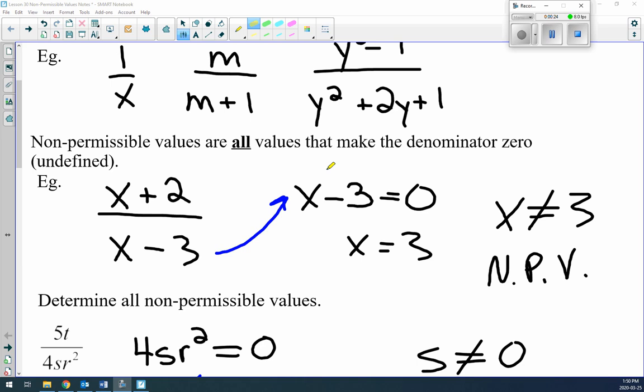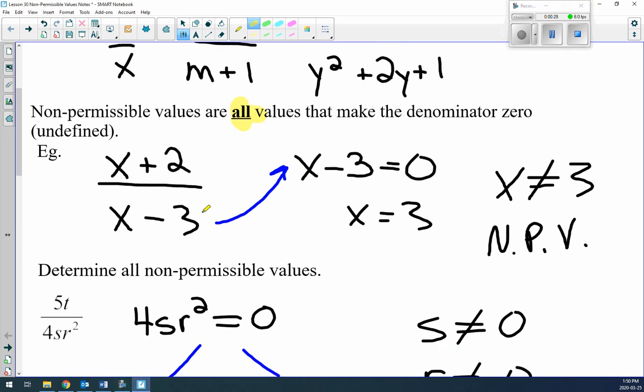Now, non-permissible values are all the values that make the denominator zero. We can't have zero in the denominator because it's undefined, and we know that's not possible.